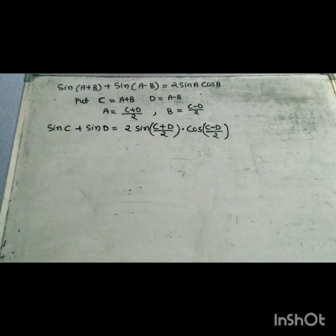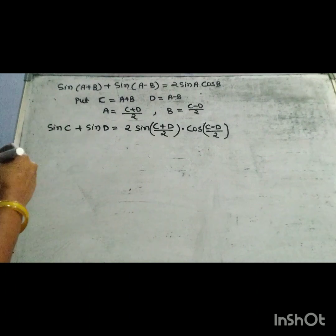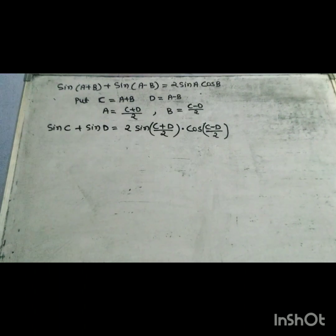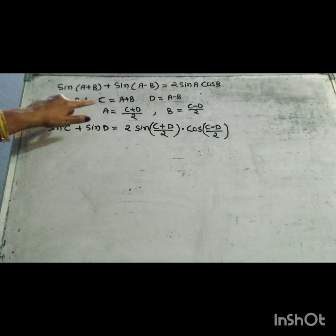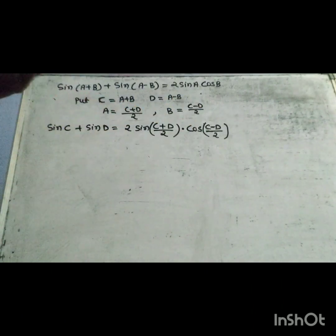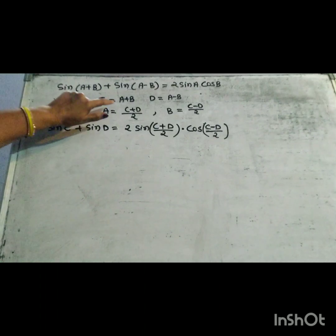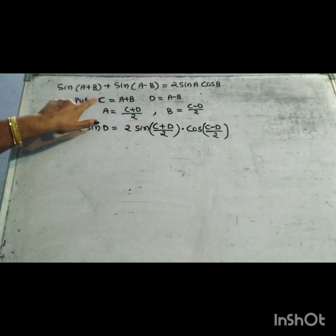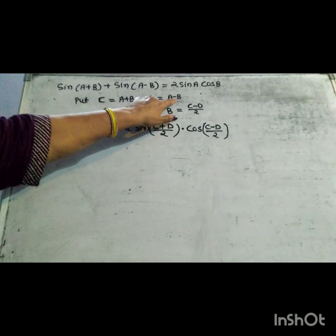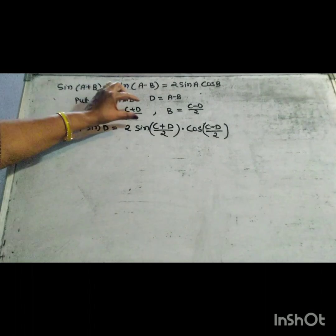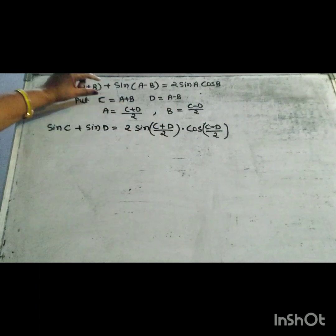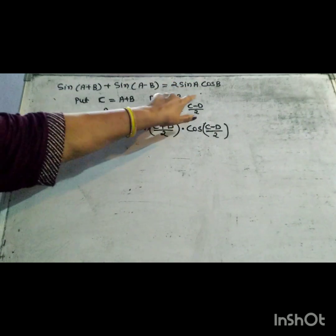The two angles are A and B. Using compound angles: sin A plus B equal to sin A cos B plus cos A sin B, and sin A minus B equal to sin A cos B minus cos A sin B. Adding: sin A plus B plus sin A minus B equal to 2 sin A cos B. Put C equal to A plus B and D equal to A minus B, so A equal to C plus D upon 2 and B equal to C minus D upon 2. This completes the proof of the factorization formula.